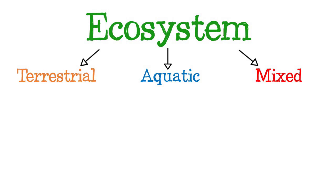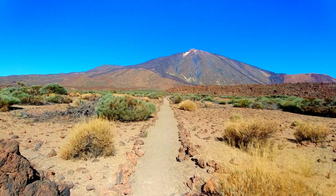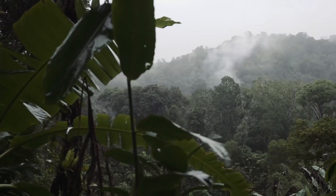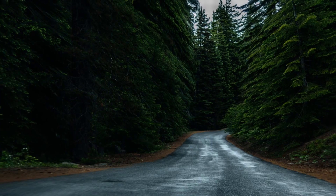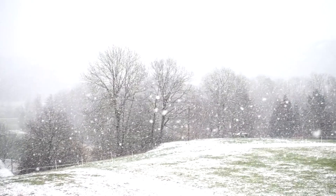as their name suggests, are those where the plants and animals that inhabit them live on land. Examples of terrestrial ecosystems are deserts, jungles, forests, tundras, and others.